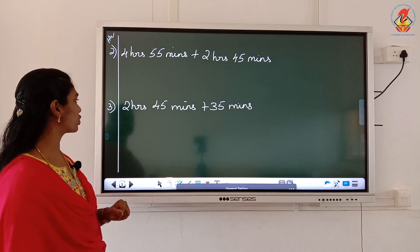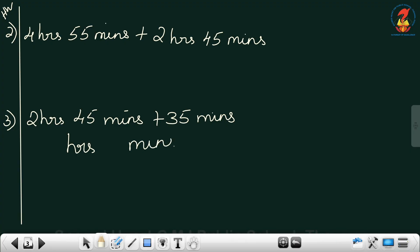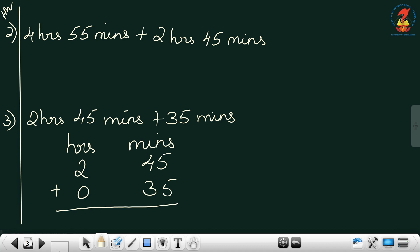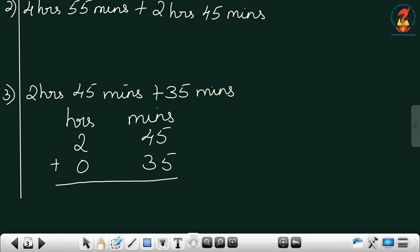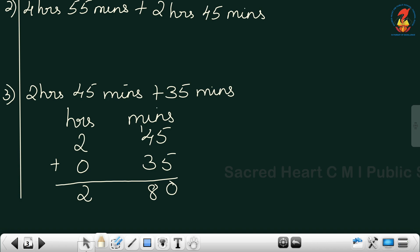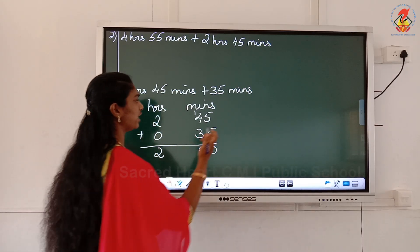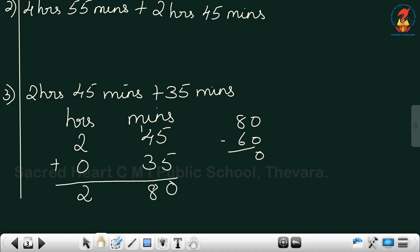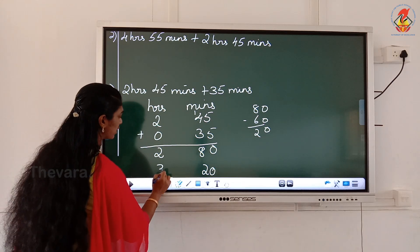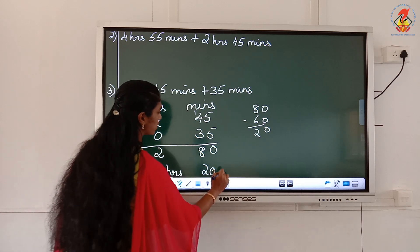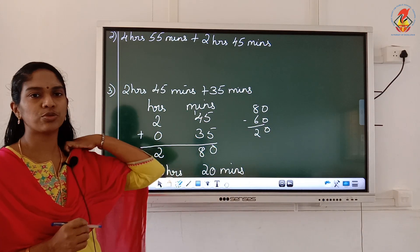Second question: 2 hours 45 minutes plus 35 minutes. There are no hours in the second number, so I can put 0 hours 35 minutes. First I add separately: 45 plus 35 gives 80 minutes, and 2 hours. From 80 minutes I take away 60 minutes. What do I get from 80? The balance is 20 minutes. That 60 minutes is 1 hour, so I add it here. This becomes 3. The answer is 3 hours 20 minutes.